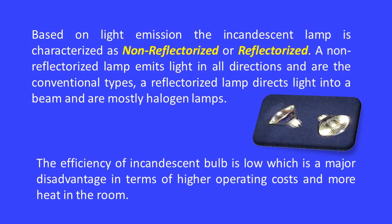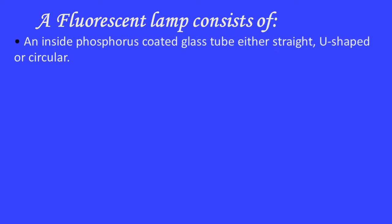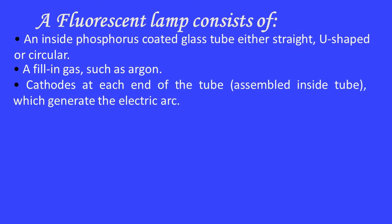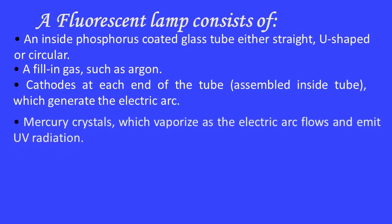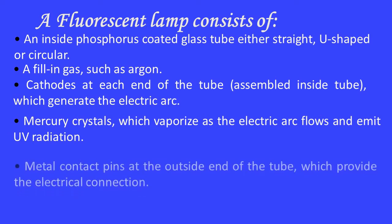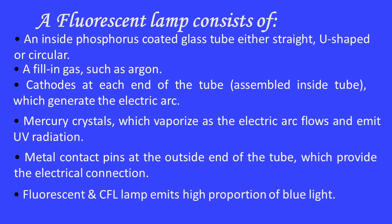A fluorescent lamp consists of an inside phosphorus-coated glass tube — either straight, U-shaped, or circular — a filling gas such as argon, cathodes at each end of the tube which generate the electric arc, mercury crystals which vaporize as the electric arc flows and emit UV radiation, and metal contact pins at the outside end of the tube which provide the electrical connection. Fluorescent and CFL lamps emit a high proportion of blue light.